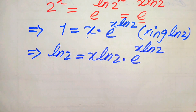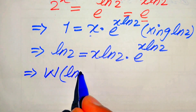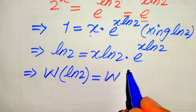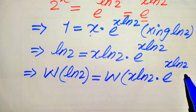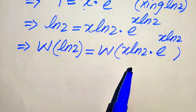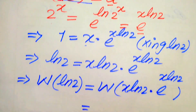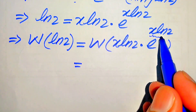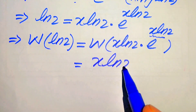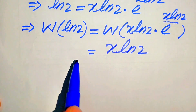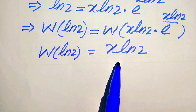Now we are ready to apply the Lambert W function on both sides. Applying W to both sides gives: W of (x times log 2 times e to the power of x times log 2). According to the Lambert W function, the output of the right hand side is the exponent of e, which is x times log 2. To solve for x, we divide both sides by log 2.